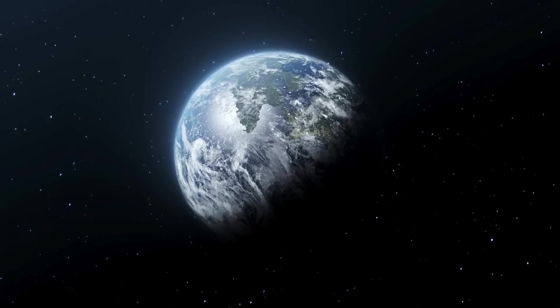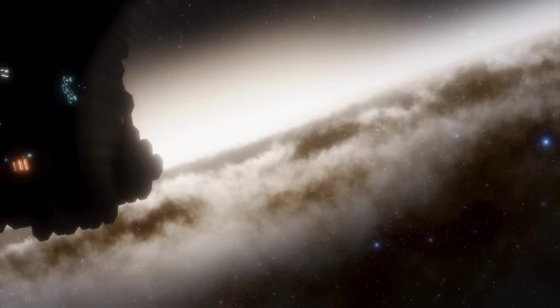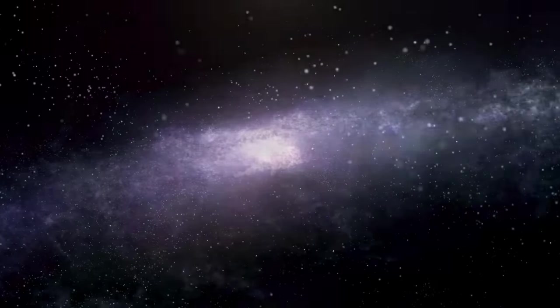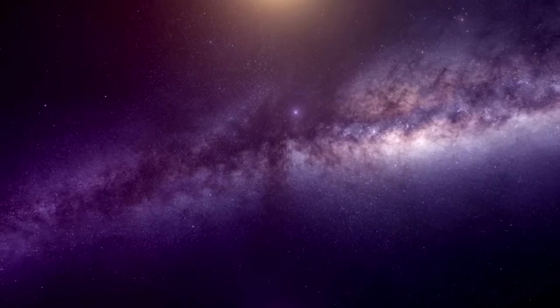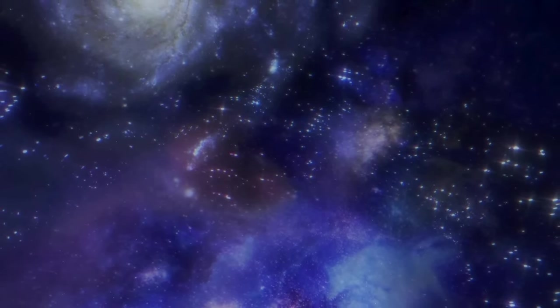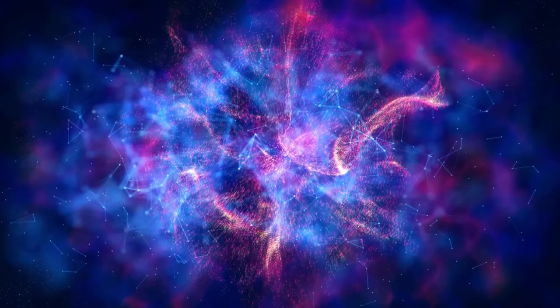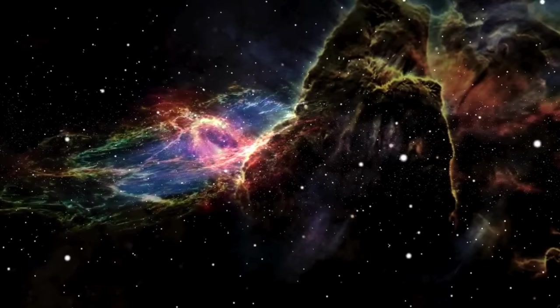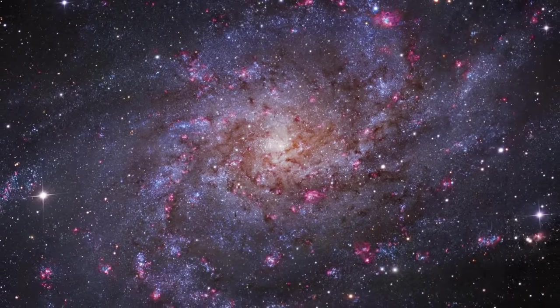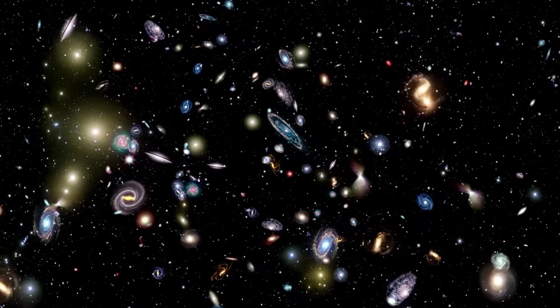We've talked about our home galaxy, the Milky Way, and its neighbors in our local group. Now let's take a few steps back and look at the bigger picture of our neighborhood in the wider universe, the Virgo supercluster. Think of the Virgo supercluster as a bustling metropolis of galaxies. It's not just our local group hanging out there, but over a hundred other galaxy groups and clusters. In terms of size, it's mind-blowingly huge, about 110 million light years across. And it's heavy too, with a mass of around 1 quadrillion 480 trillion times the mass of our sun.